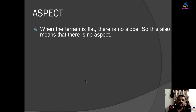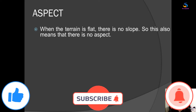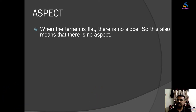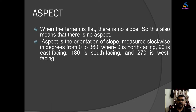Now, coming to aspect. When the terrain is flat — if the terrain is flat there is no height and no slope — that also means there is no aspect. Without height or without a slope, there is no aspect. Aspect is the orientation of slope, measured clockwise in degrees from 0 to 360.